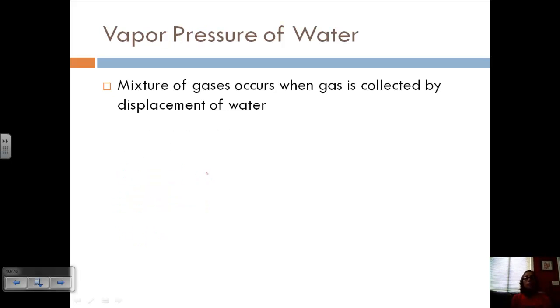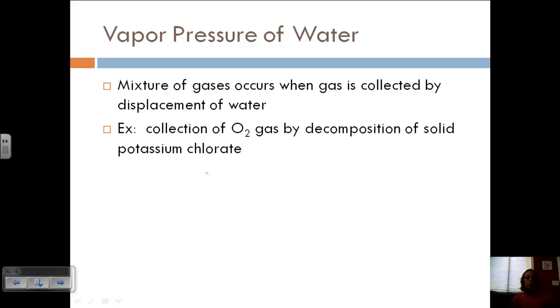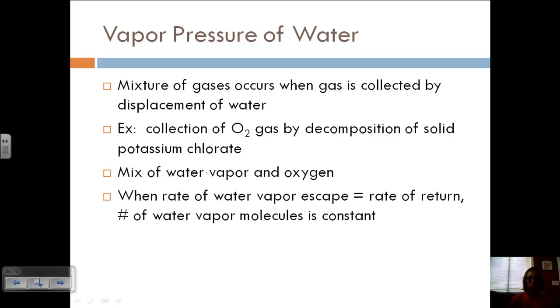Okay, so let's also talk about the vapor pressure of water. When we collect a gas through the displacement of water, we're going to get a mixture of gases, one of those being water vapor. For example, if we collect oxygen gas by decomposing solid potassium chlorate, then the gas that we collect is going to be a mixture of oxygen and water vapor, because we're displacing the water to collect the oxygen.